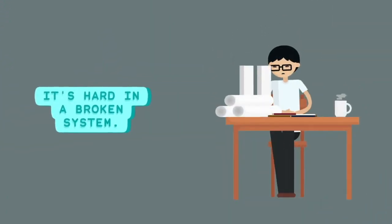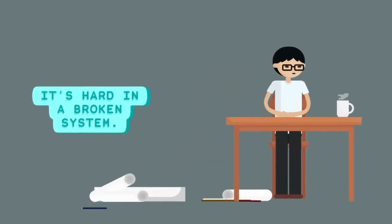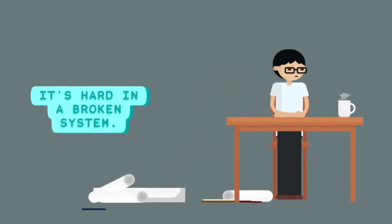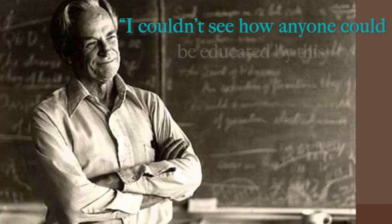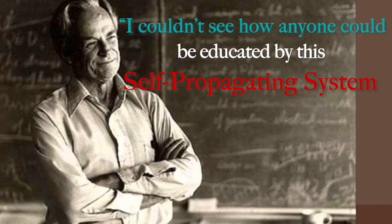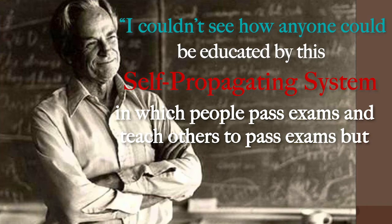Kids are studying hard and they want to learn, but in a broken system, it's very difficult to get somewhere. In Feynman's words, I couldn't see how anyone could be educated by this self-propagating system, in which people pass exams, and teach others to pass exams, but nobody knows anything.